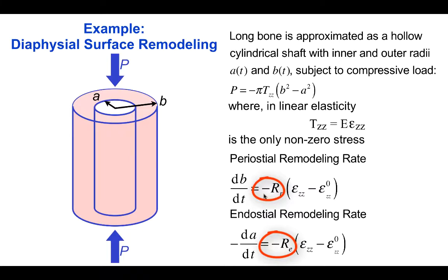And so an increase in the load P would make ε_zz more negative, which would, with this minus sign, result in an increase in the outer diameter b, which would therefore increase the cross-sectional area, thereby tending to return the stress and the strain back to normal.